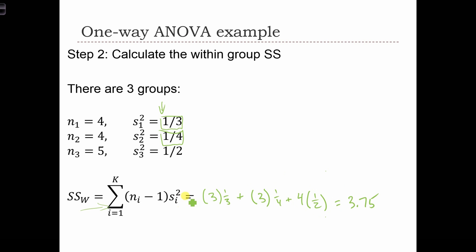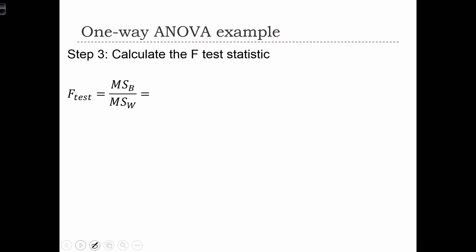So now we've calculated the within-group sum of squares and the between-group sum of squares. Next is we have to form our ratio. Now our F-test is the mean sum of squares, the ratio of the mean sum of squares. So MSB is SSB over degrees of freedom 1, which was k minus 1. And the denominator here, the mean sum of squares within, was sum of squares within divided by n minus k, the degrees of freedom. So filling out the rest of the numbers, we have 8.25 over 2 divided by 3.75 over 10, which equals exactly 11.